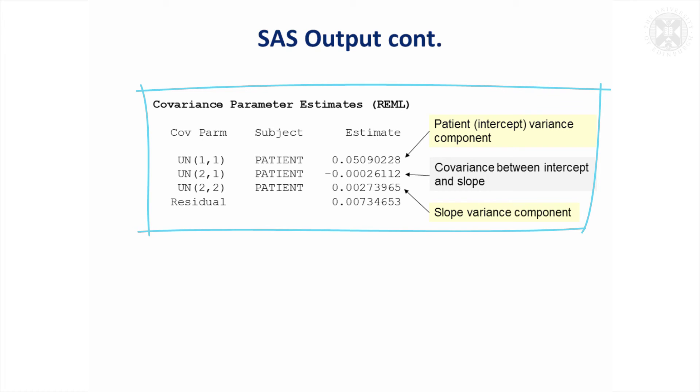That was a very quick example on random coefficients models, just to show that you can actually model the relationship with time and take into account the repeated measurements.